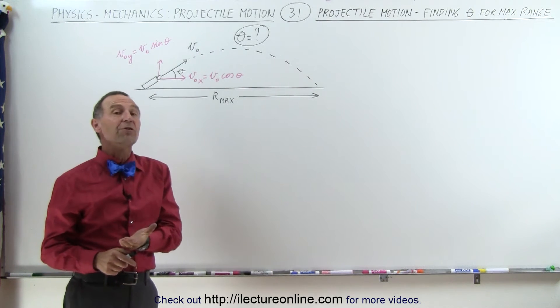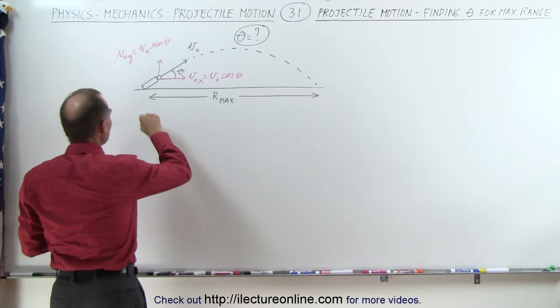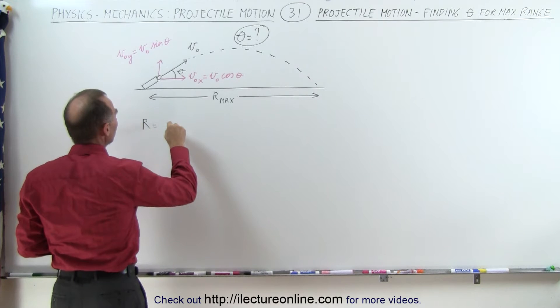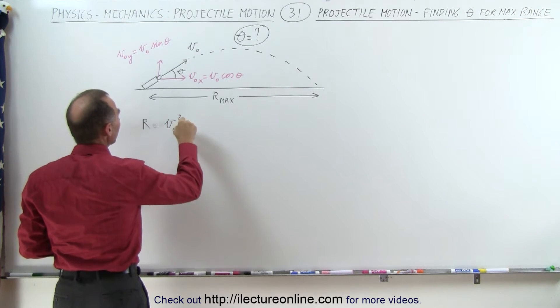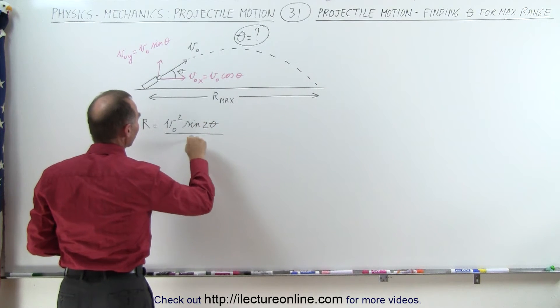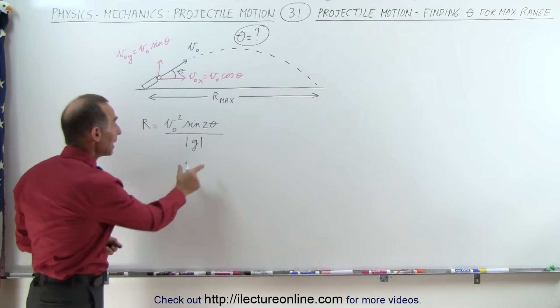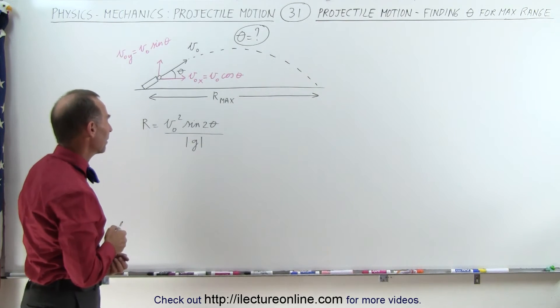From the previous video we figured out what the range equation was. We can say the range is equal to v initial squared times the sine of twice the angle theta divided by the absolute value of g. Remember that g was a negative 9.8 so we make that into a positive 9.8 here.